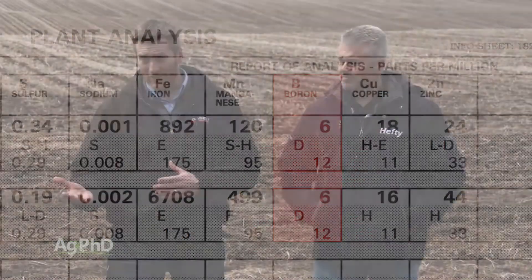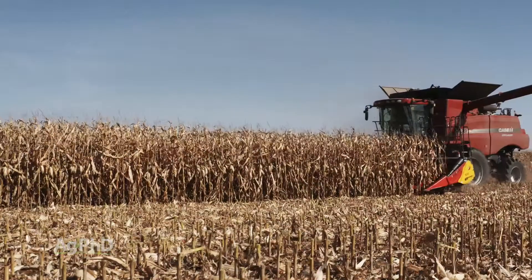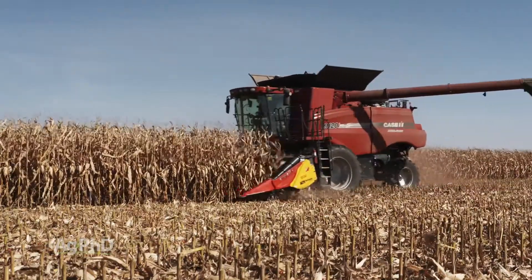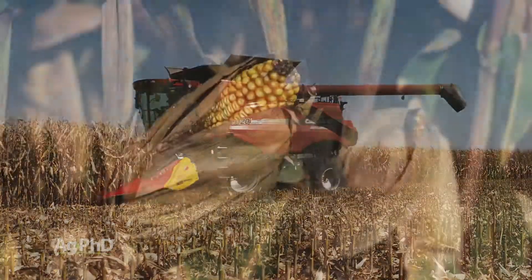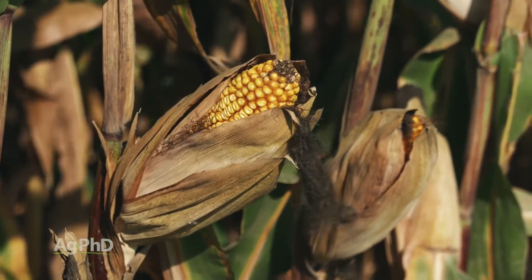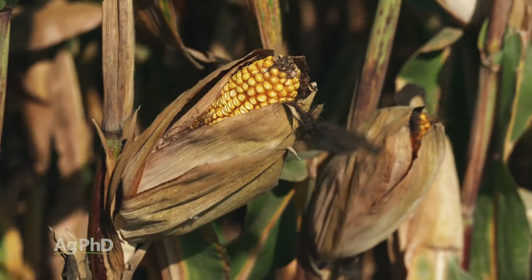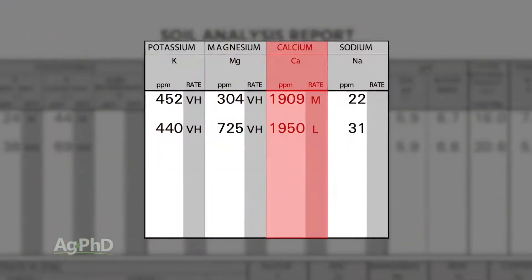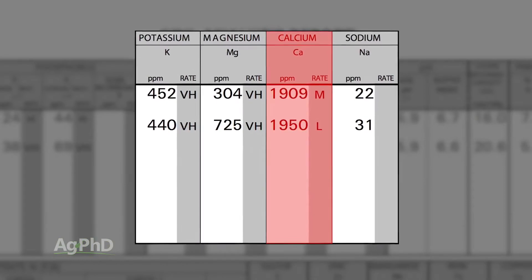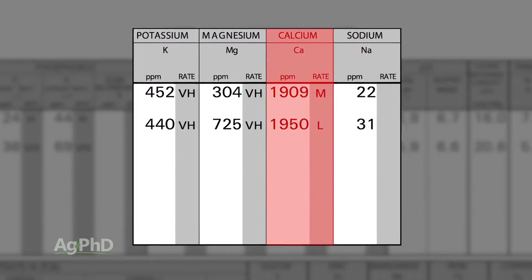The other thing you can do is compare field to field, and also areas within a field. Pick a high-yielding spot — maybe your field runs 220 bushel but one spot goes 280 every year. Find out what's great in that 280 spot. Compare it to the average or worst part of your field and see where you've got more calcium or where you're short, then look at soil samples to confirm that's your yield-limiting factor.